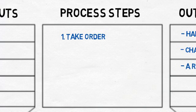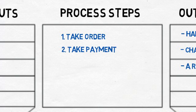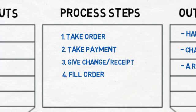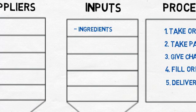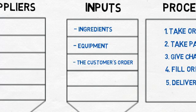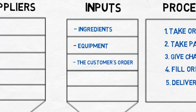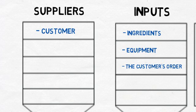With this information, list the major steps of the process: take the order, take the payment, give the customer change and a receipt, fill the order, and finally, deliver the order. Next, define the inputs of the process, or what makes the process start: ingredients, equipment, and the customer's order. Finally, determine the process suppliers, or who supplies the inputs to the process. Note, it is common to have the suppliers and customer on the SIPOC be the same answer.